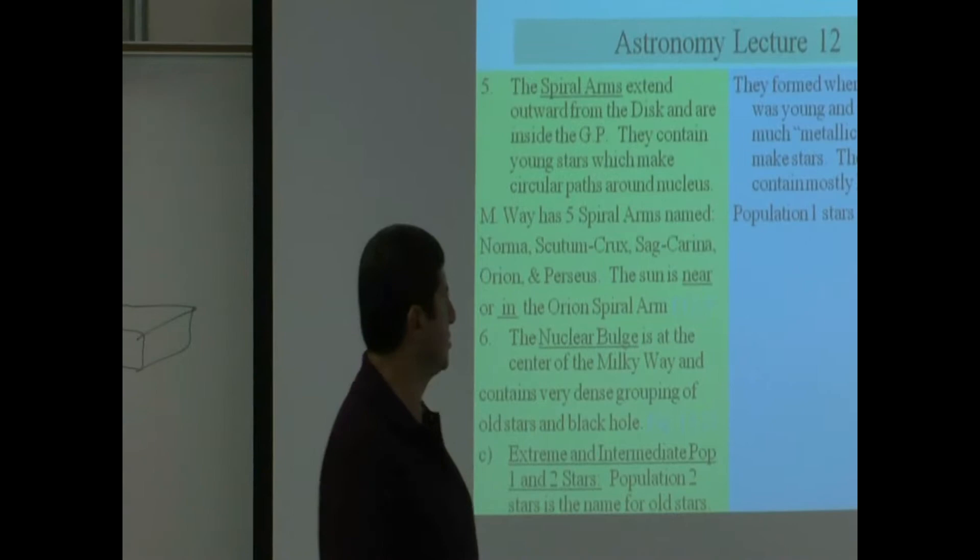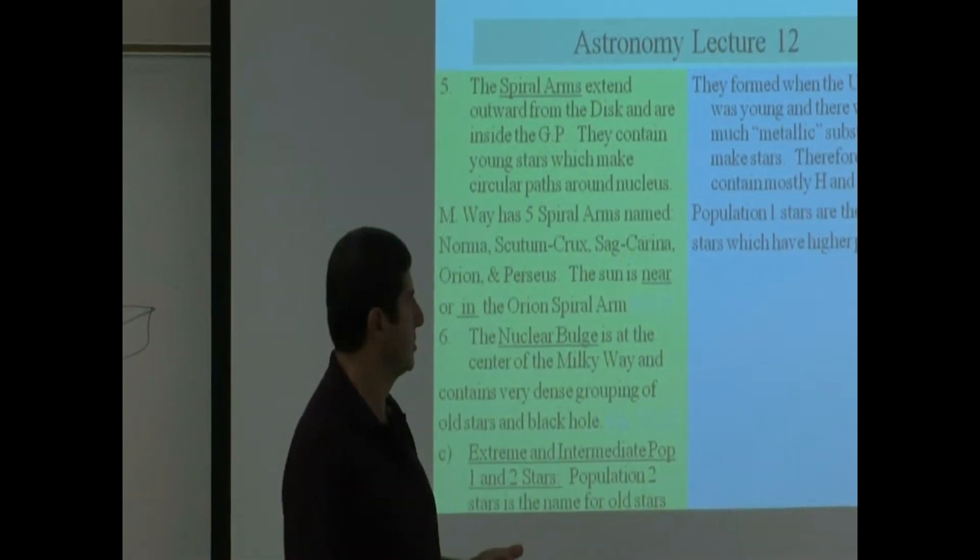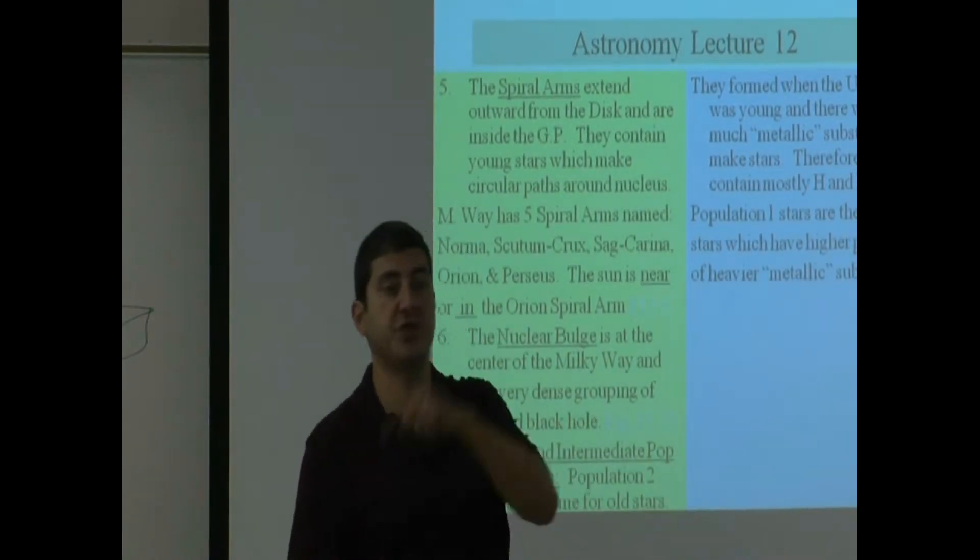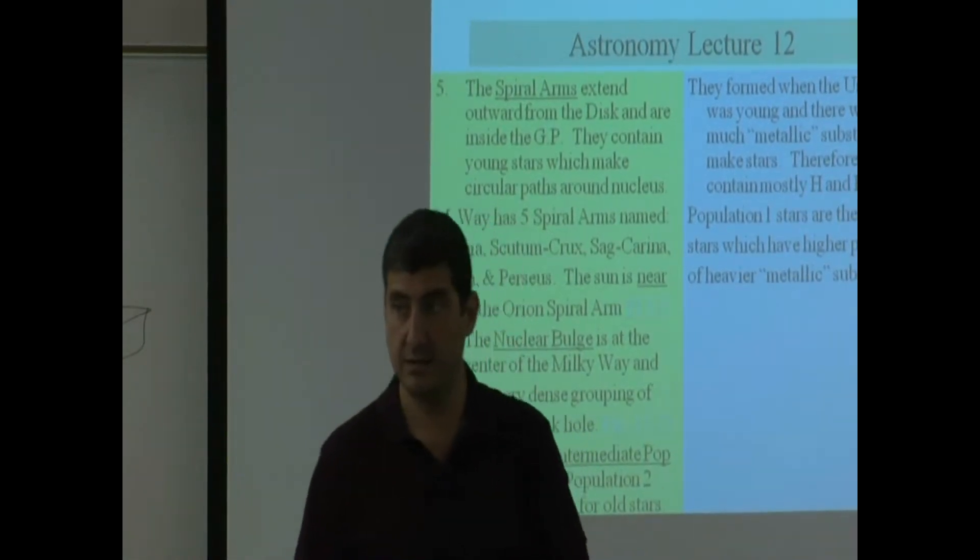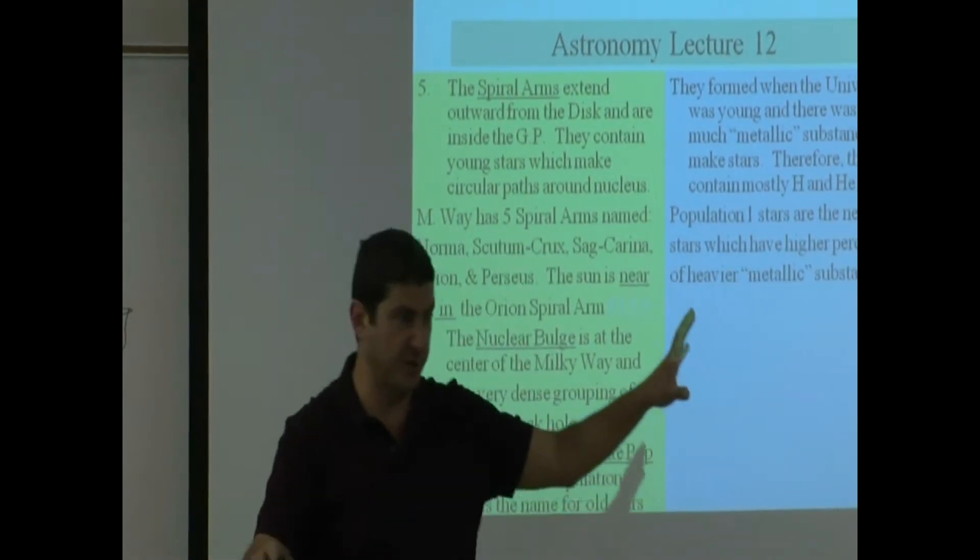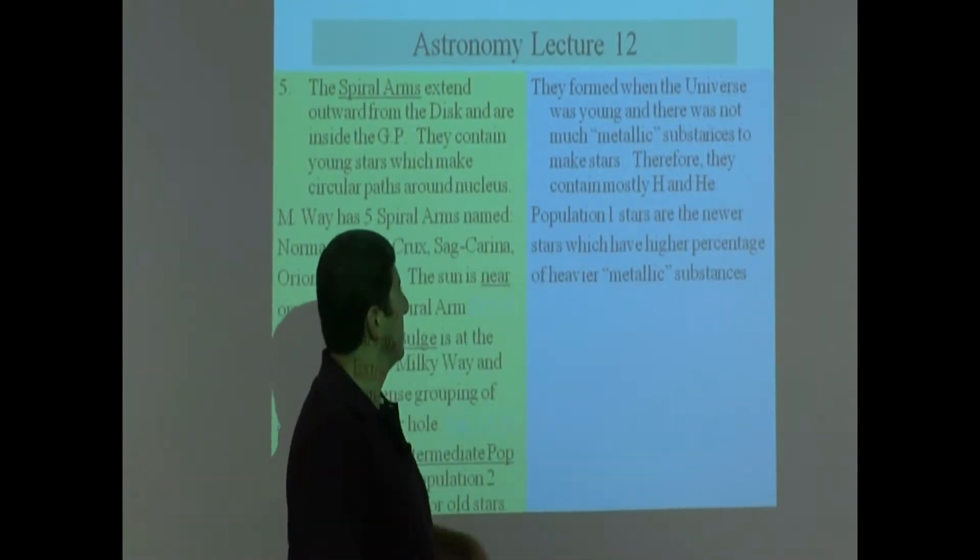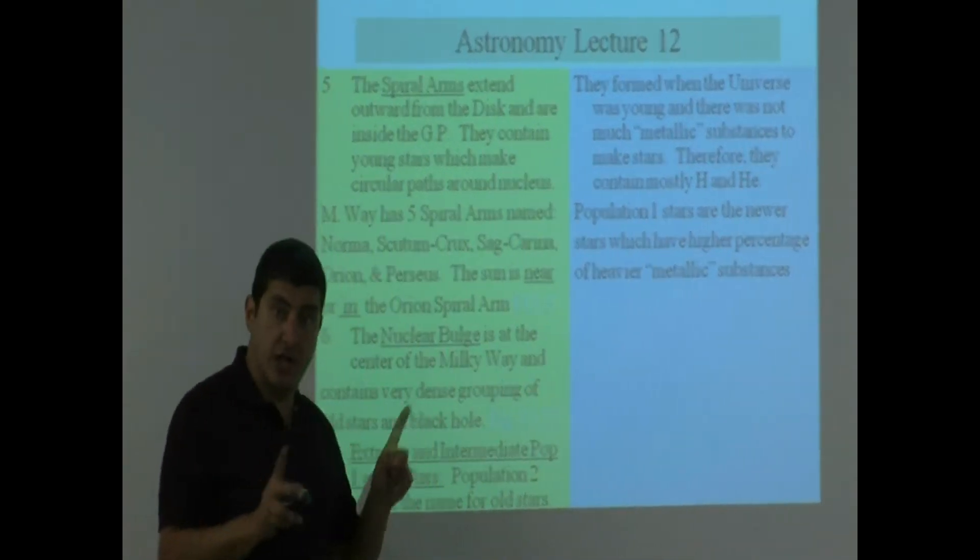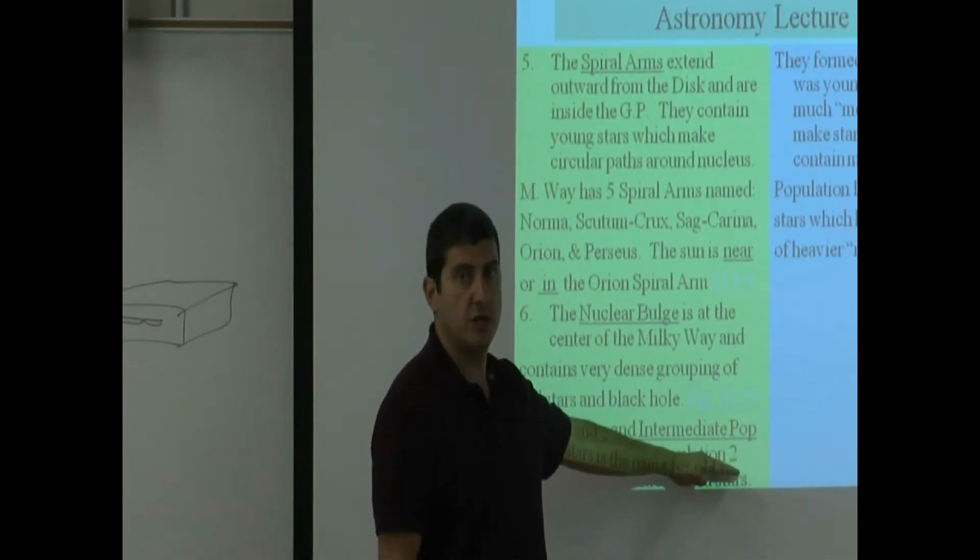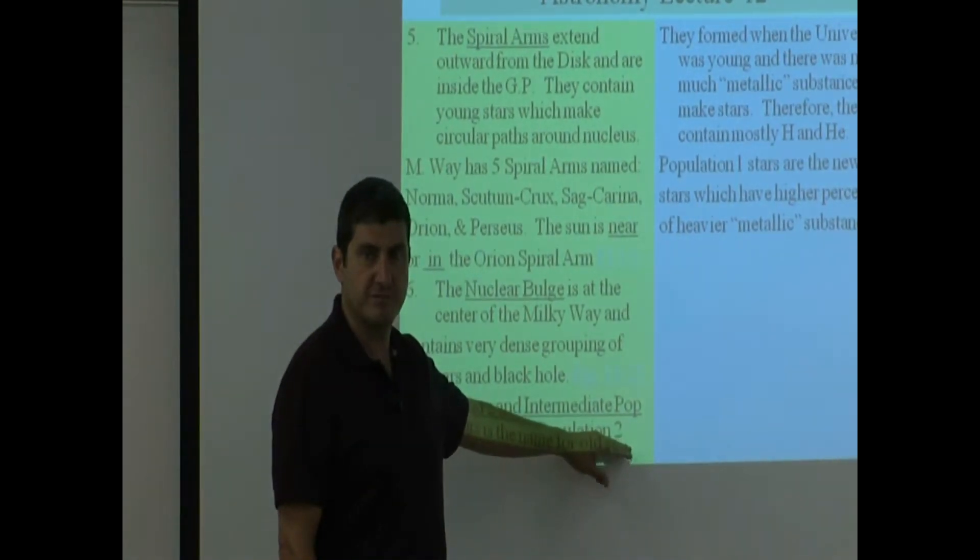Population 1 stars are the newer stars which have higher percentage of heavier metallic substances. Why? Previous generations of stars died, they made those heavier elements, they spewed them out into outer space, and then new stars began forming. So if I had to tell you which one I expect, I wouldn't expect Pop 2 star, a lot of them to have Earth-like planets around them, right?